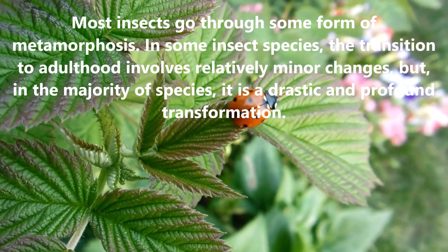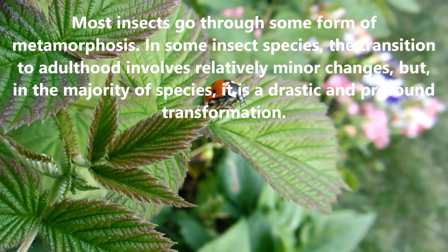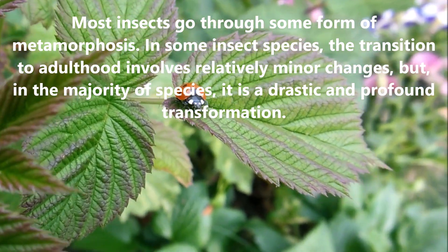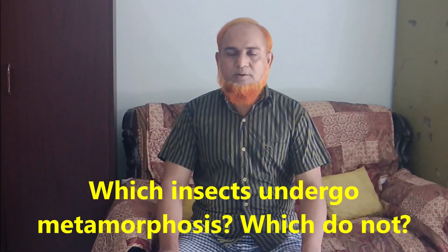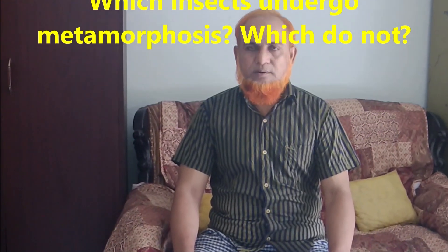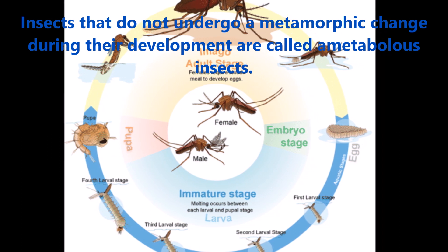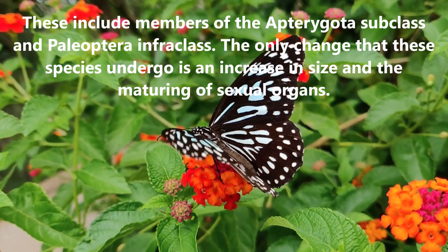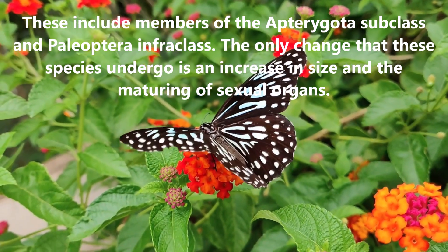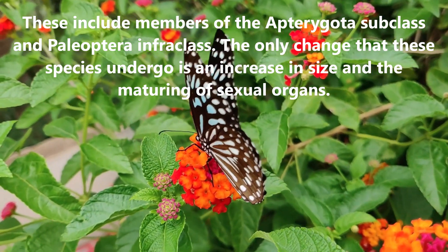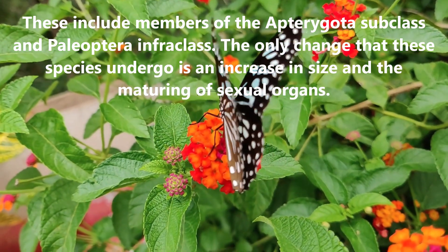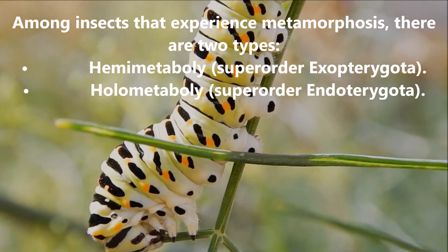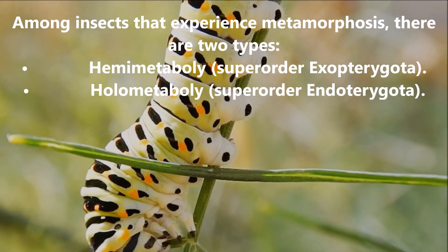In some insect species, the transition to adulthood involves relatively minor changes, but in the majority of species it is a drastic and profound transformation. Insects that do not undergo a metamorphosis change during their development are called ametabolous insects. This includes members of the Apterygota subclass and Palaeoptera infraclass. The only change that these species undergo is an increase in size and the maturing of sexual organs. Among insects that experience metamorphosis, there are two types: hemimetabolous and holometabolous.